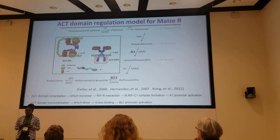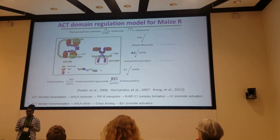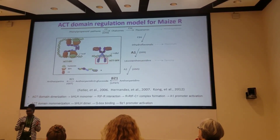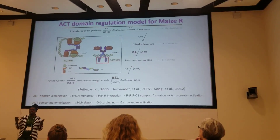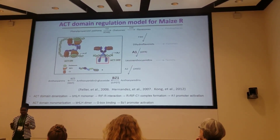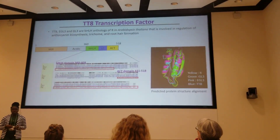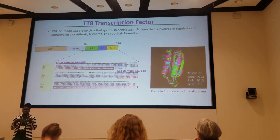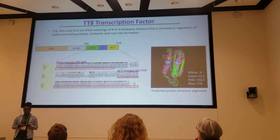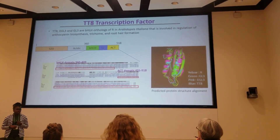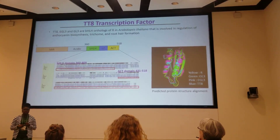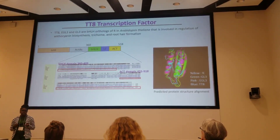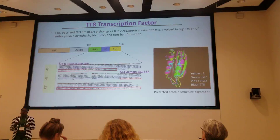This is the regulatory model we have for the ACT domain of R. I found this quite interesting and wanted to understand if this same model is followed in Arabidopsis thaliana. As a model plant, if we can figure out the regulation in Arabidopsis, we can have a model for every other higher-order plant. In Arabidopsis, we identified three orthologs of R out of about 160 bHLH transcription factors: TT8 (transparent testa 8), EGL3, and GL3. These are responsible for root hair formation, trichome formation, and anthocyanin biosynthesis.